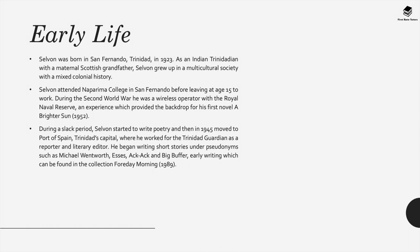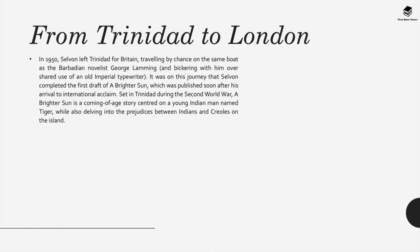During a slack period, Selvon started to write poetry, and then in 1945 at the end of the Second World War he moved to Port of Spain, Trinidad's capital, where he worked for the Trinidad Guardian as a reporter and literary editor. In 1950 he left Trinidad for Britain, travelling by chance on the same boat as the Barbadian novelist George Lamming, and it was on this journey that Selvon completed the first draft of A Brighter Sun, which was published soon after his arrival to international acclaim.